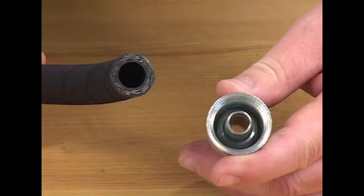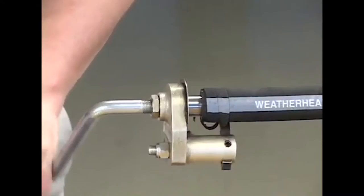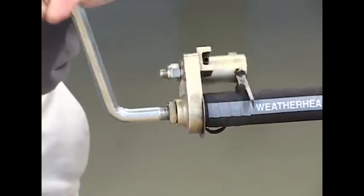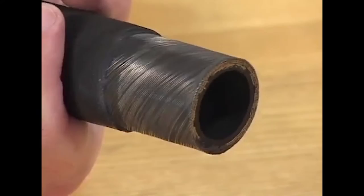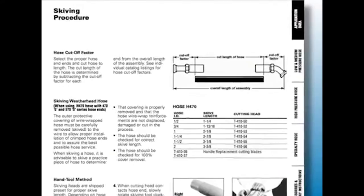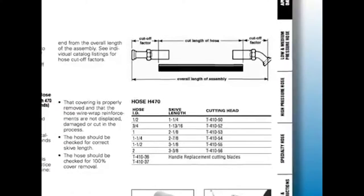Some hose ends require the hose to be skived before assembly. This involves the removal of the outer hose cover at both ends. Instructions for proper skiving are found in the Eaton Weatherhead Master Hose Assembly Catalog. A good skive looks like this, with the cover completely removed, yet the wire wrap is not damaged or disturbed in any way. Refer to the Eaton Weatherhead Crimp Specifications Manual to determine if an Eaton Weatherhead hose must be skived.